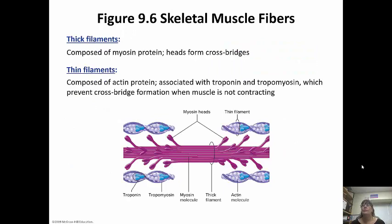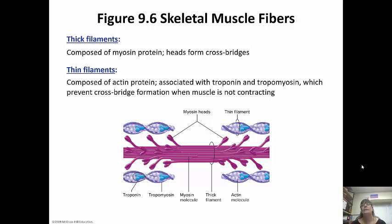The thick filaments are the myosin protein and these are what form cross bridges. The thin filaments are the actin protein and they're also associated with the regulatory proteins troponin and tropomyosin. Those prevent cross bridge formation when the muscle is not contracting. The myosin heads look like two twisted golf clubs, and those heads are what bind to the actin filaments.